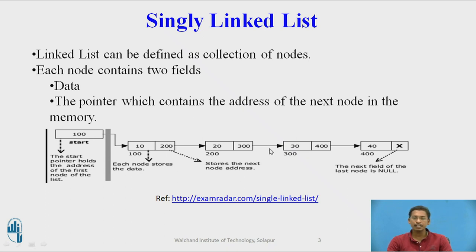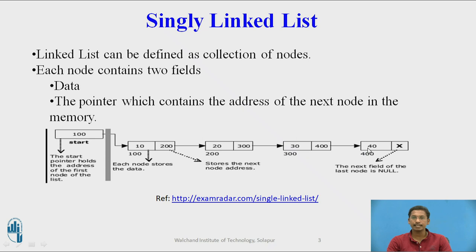This is an example of a singly linked list. Suppose there are four nodes with values 10, 20, 30, and 40 stored in the data part. Each node's next part stores the address of the next node — for example, 200 is stored in node 10's next part. The last node's next part always contains null, indicating the end of the singly linked list.